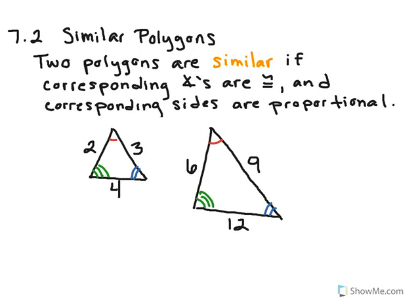So we can check off the first main thing that we need in order to determine similarity. The second thing is determining if the corresponding sides are proportional. And what it means by proportional is that when you put it as a ratio, they all come out to be the same exact thing.